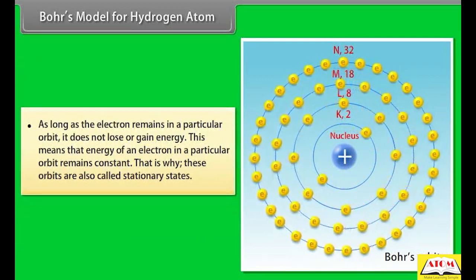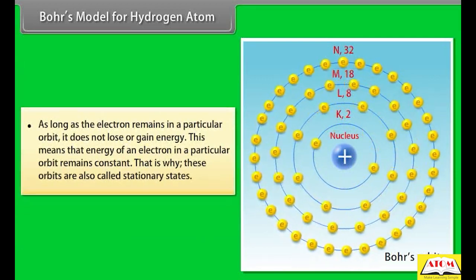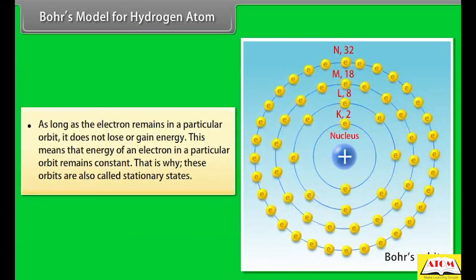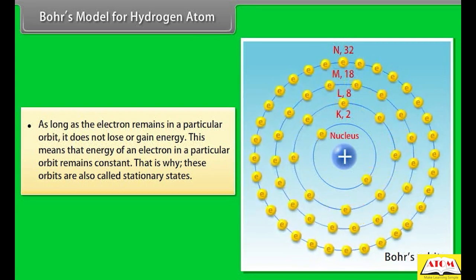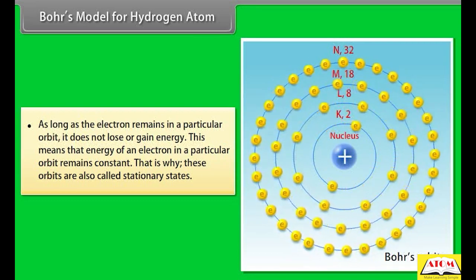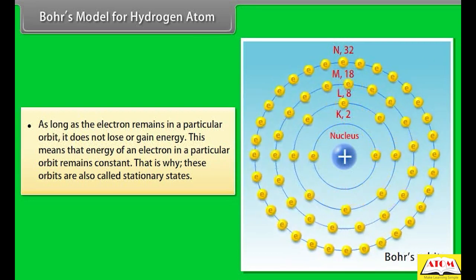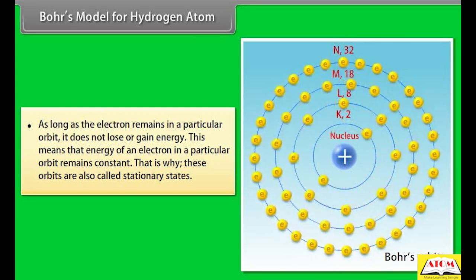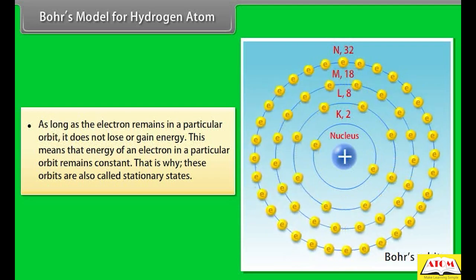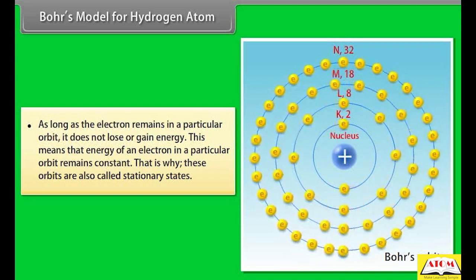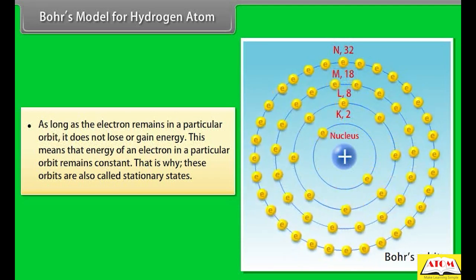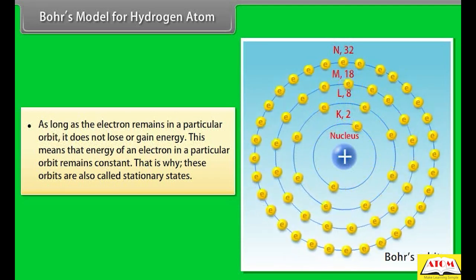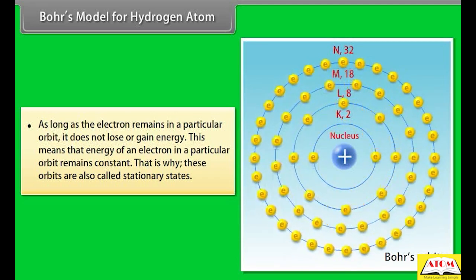As long as the electron remains in a particular orbit, it does not lose or gain energy. This means the energy of an electron in a particular orbit remains constant. That is why these orbits are called stationary states.